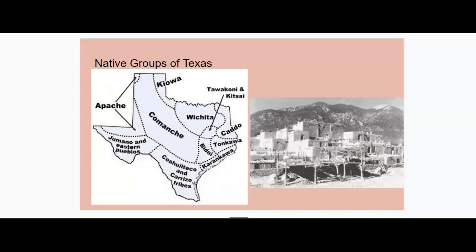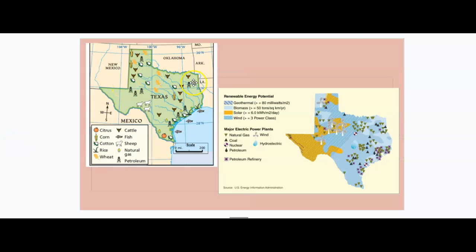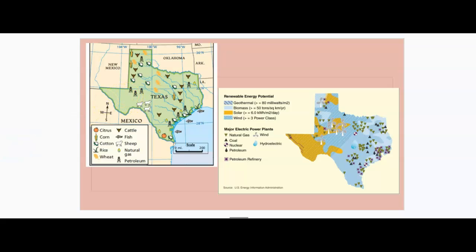In terms of resources, a lot of this region benefits from solar power — there's plenty of sun out there. As for farming, there is less agriculture here than elsewhere in the state, though some does exist. The majority of cotton farming takes place on the plains or other areas. Any farming in the Mountains and Basins region has to be done with irrigation because there is very little rainfall.